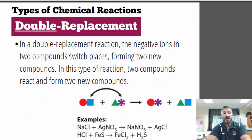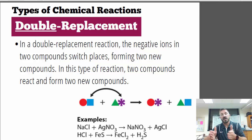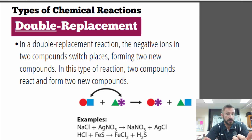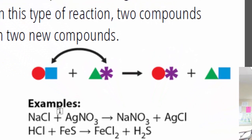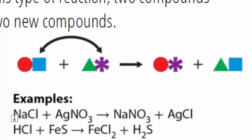The next type is double displacement. In double displacement, you have compound plus compound → compound plus compound. Two negative ions basically switch places to form two new compounds. An example: sodium chloride plus silver nitrate. The chloride and the nitrate are both negative — they switch places. The chloride is now with the silver, and the nitrate is now with the sodium. Since everything is plus and minus 1, the formulas remain the same.